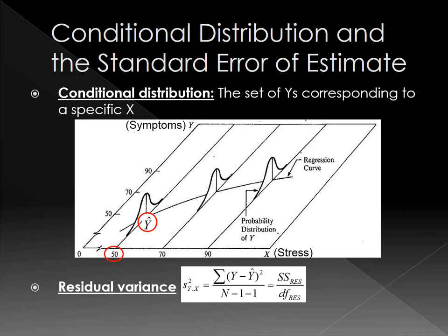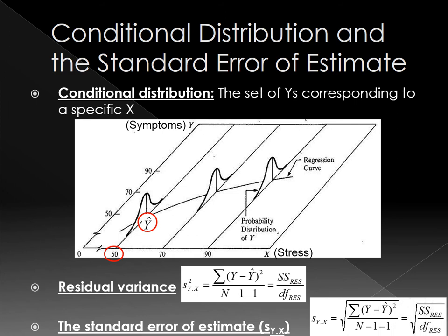It equals to each true y minus predicted y hat, you square it and you add them together. This is called sum of squares for errors or sum of the squares for residual, SS residual, divided by n minus 1 minus 1. It is called SS residual divided by DF residual. The first one is we have just one predictor. Then the square root of this residual variance is called the standard error of estimate, s y dot x. That is the square root of SS residual divided by DF residual.